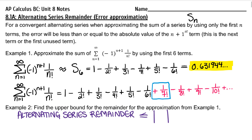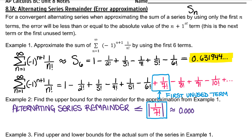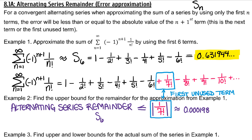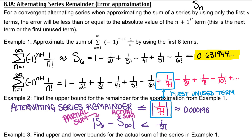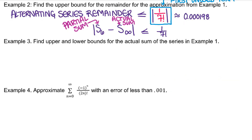For clarification, that would be the absolute value of that term, because this is an alternating series and the first unused term could easily be negative. That is approximately 0.000198. So the sixth partial sum is a great estimation of the actual sum. The alternating series remainder for this particular one is: if I took the sixth partial sum approximation and subtracted the actual sum and took the absolute value, the error would be less than or equal to the absolute value of 1 over 7 factorial. So the upper bound for our remainder is 1 over 7 factorial.